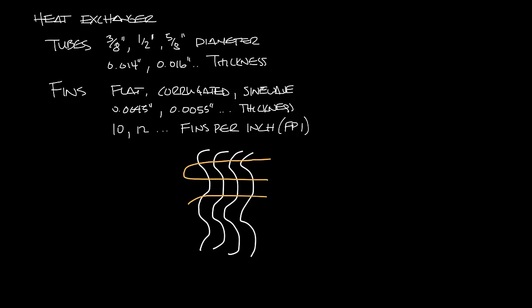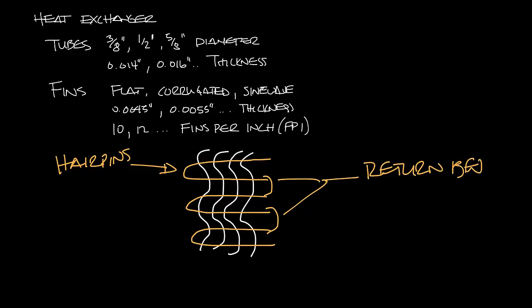The copper tubes are bent into hairpins and inserted through the fins. And then each hairpin is connected on the opposite side with a return vent that's welded on so that you get continuous flow of water through the tubes. And then on the ends you have your headers, also known as manifolds. This is where your supply and return water piping is connected to the water coil.